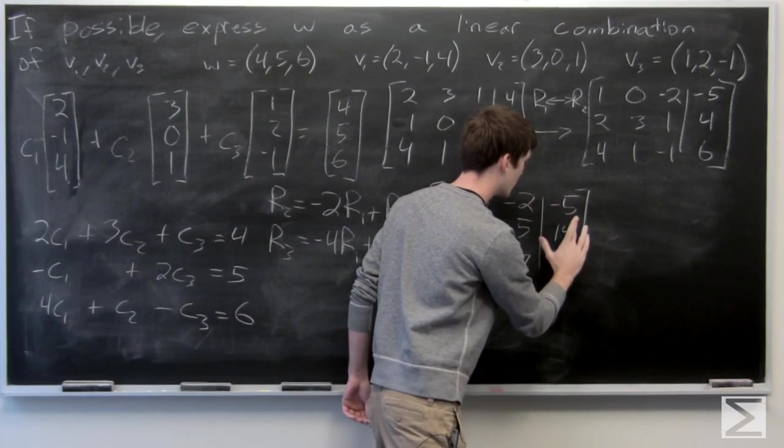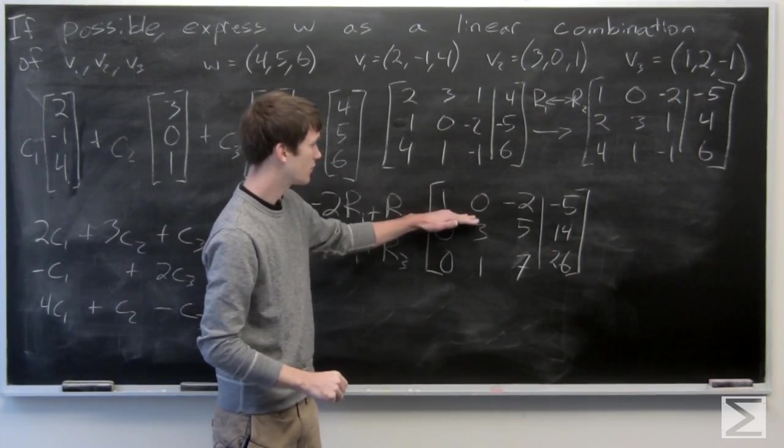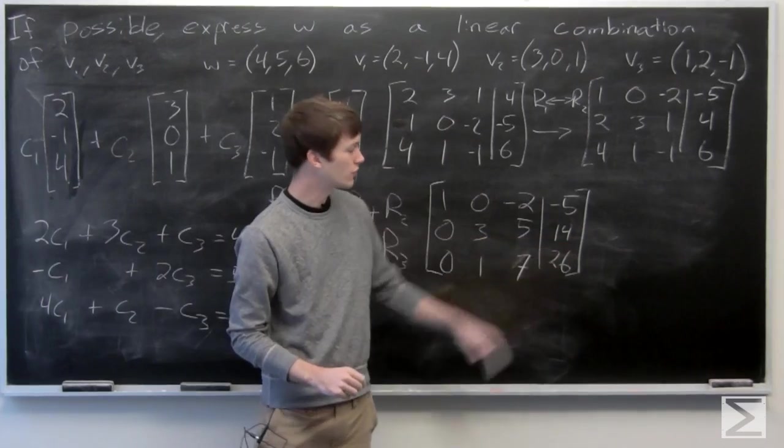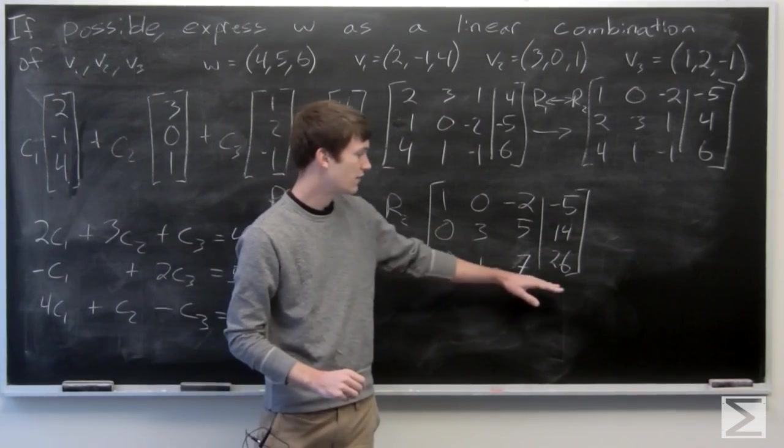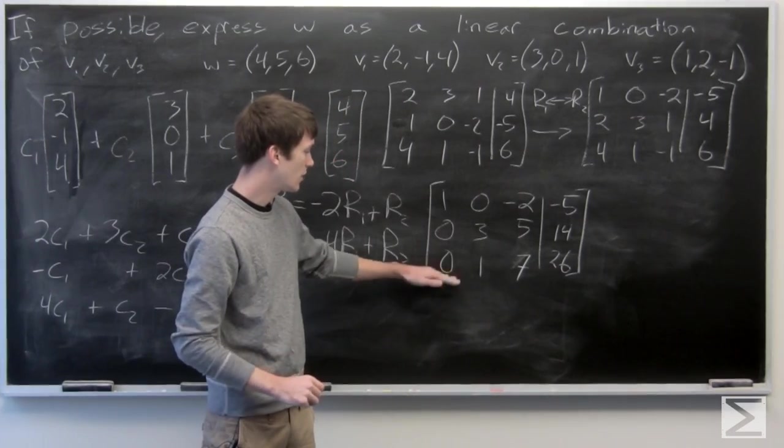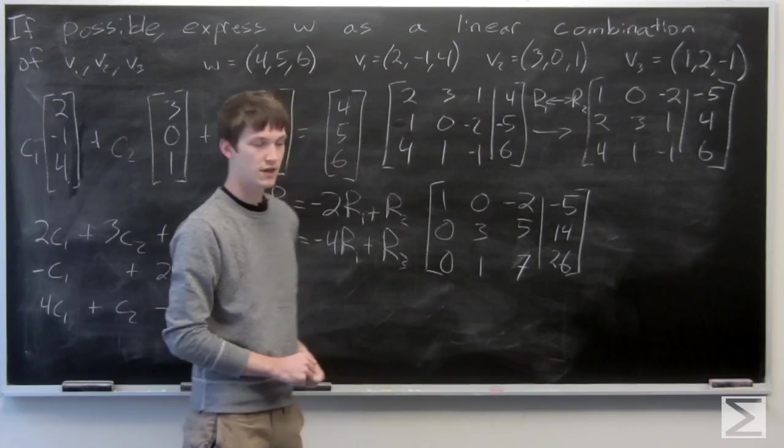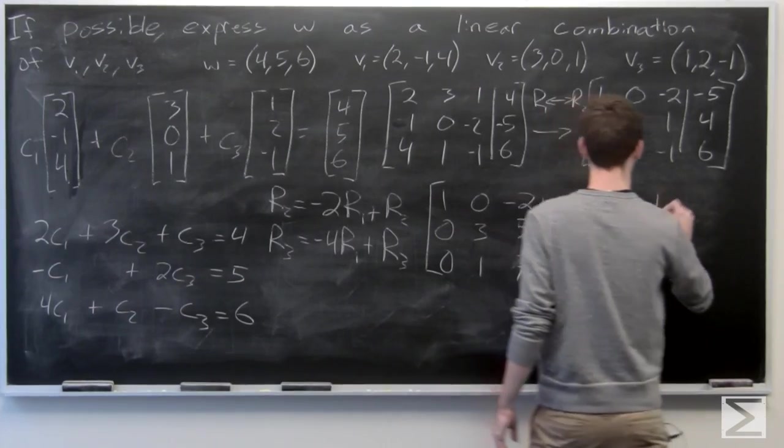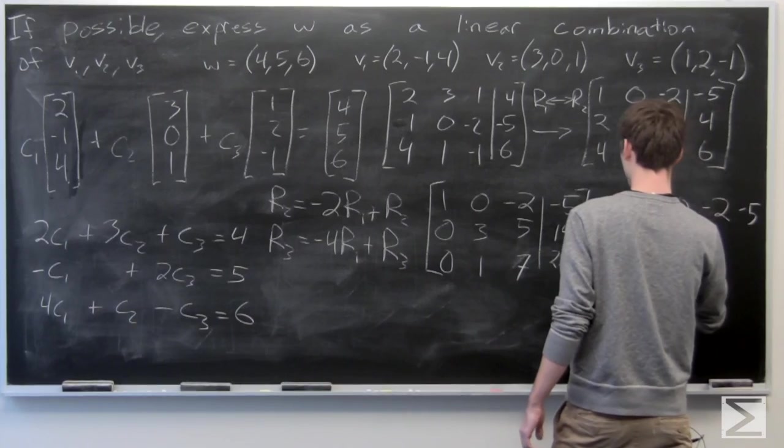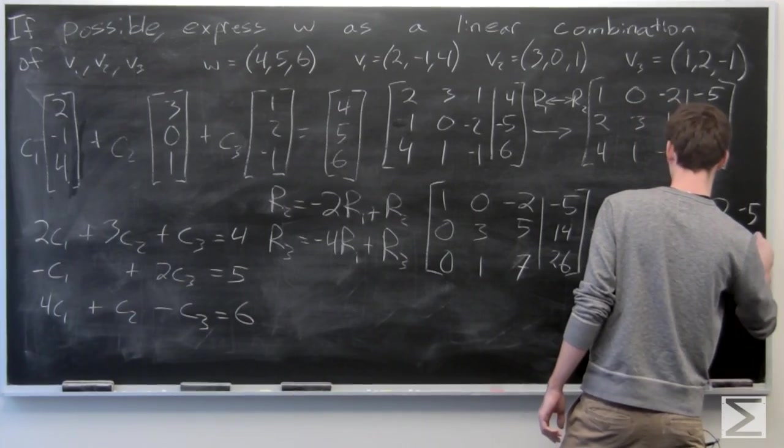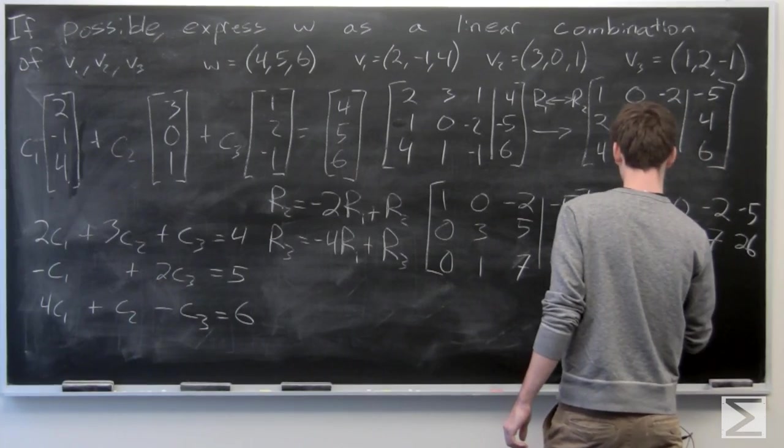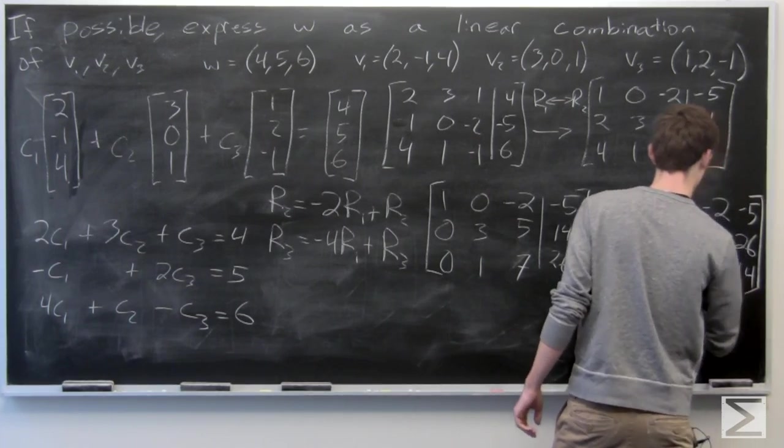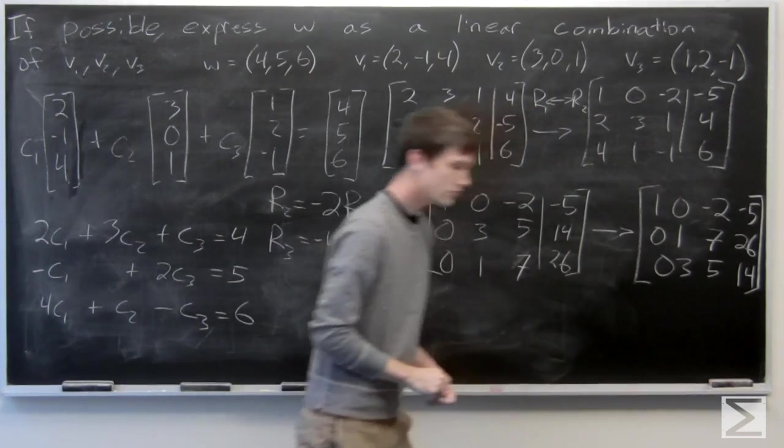So we get the following matrix. Our row one is the same as before. Row two goes to (0, 3, 5, 14), and row three goes to (0, 1, 7, 26). Go ahead and swap rows two and three since we already have a one in the second column of row three.